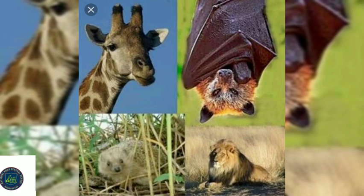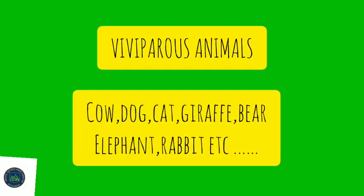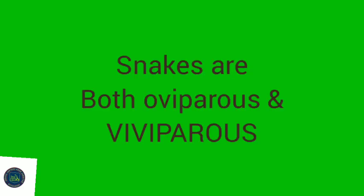The animals like giraffe, cow, goat, cat, dog, rabbit, etc. are examples of viviparous animals.